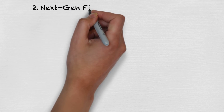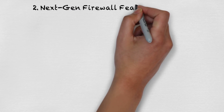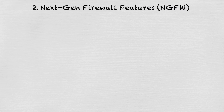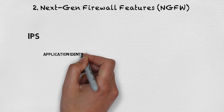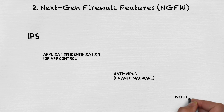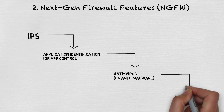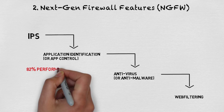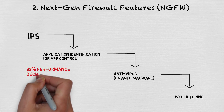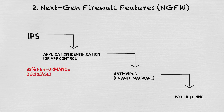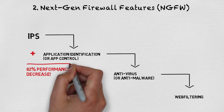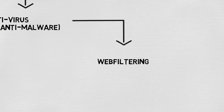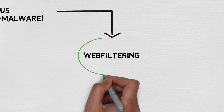Number two: next-gen firewall features. Next-gen firewalls have a lot of great features like IPS, application identification, antivirus, and many others. However, there is a performance cost for every feature that's enabled. In NSS's 2018 Next Generation Firewall Report, some vendors dropped as much as 82% by enabling IPS and application identification, and that wasn't even including more resource-intensive features like antivirus, web filtering, and DLP. Your first step is deciding on what features you need or plan to implement.